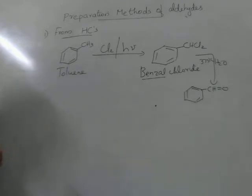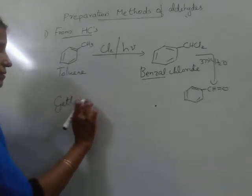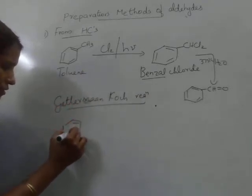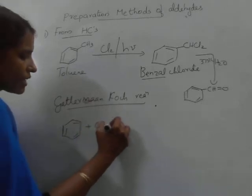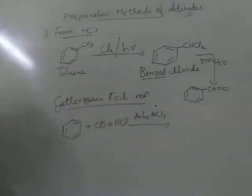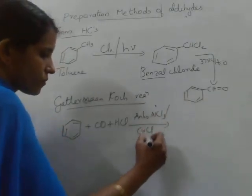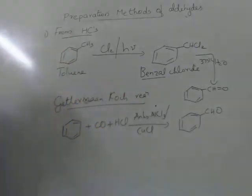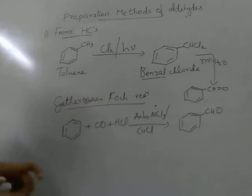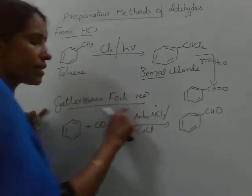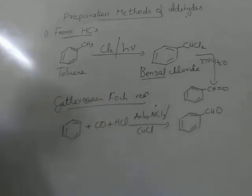Now one more method to convert aromatic hydrocarbons into aldehyde, called the Gattermann-Koch reaction. In this reaction, benzene and its derivatives react with carbon monoxide and hydrogen chloride in the presence of anhydrous aluminium chloride or cuprous chloride. The product obtained is benzaldehyde. Benzene is converted to benzaldehyde by treating with CO and HCl in the presence of anhydrous AlCl₃ or CuCl. This reaction is called the Gattermann-Koch reaction. These are the methods for the preparation of aldehydes only.